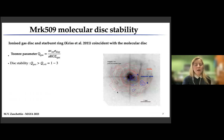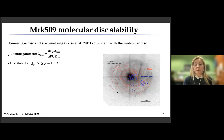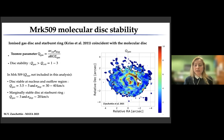We then analyzed the molecular disk stability by computing the Toomre-Q parameter. If this parameter is above a critical value — between one and three for gas — the gas is stable against fragmentation. The images plot the contours of the CO disk superimposed on HST images showing the starburst ring. What we found is that the disk is stable at the nucleus and in the outer region, but only marginally stable at the starburst ring.